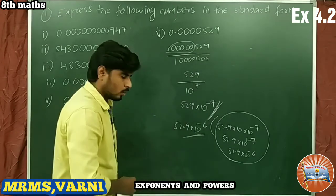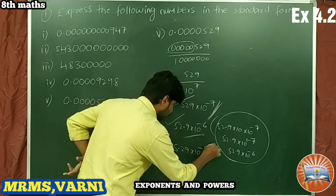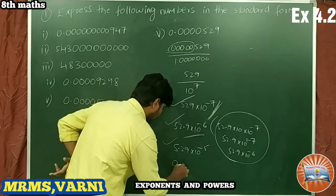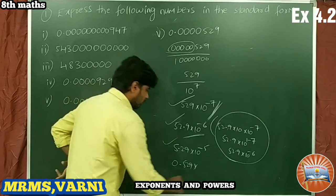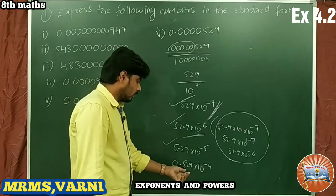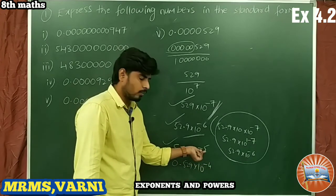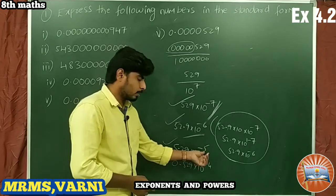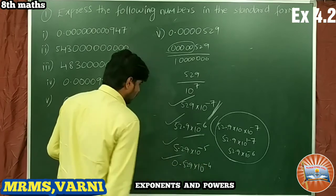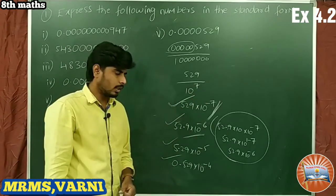Further: 5.29 × 10^(−5), or 0.529 × 10^(−4). So we have four ways. The rule is: if you move the decimal point forward (making the number smaller), you reduce the magnitude of the negative exponent. If the exponent is positive, you increase the power. All these are correct answers — pause the video and write them down.